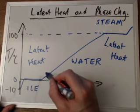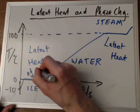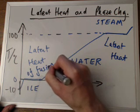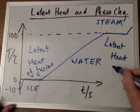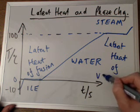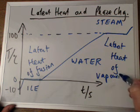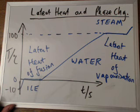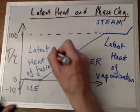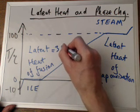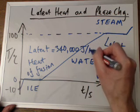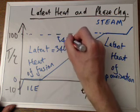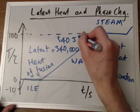So here, when we're turning from ice into water, that's known as latent heat of fusion. And the latent heat of fusion for water is equal to 340,000 joules per kilogram, or 340 joules per gram.